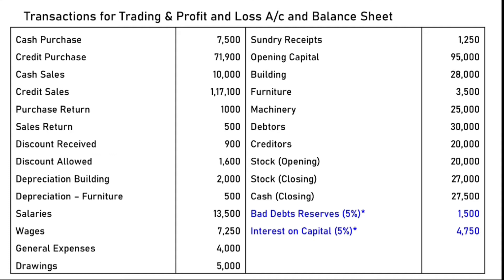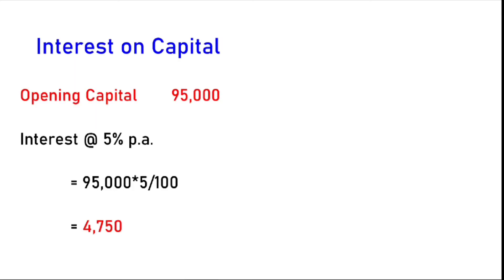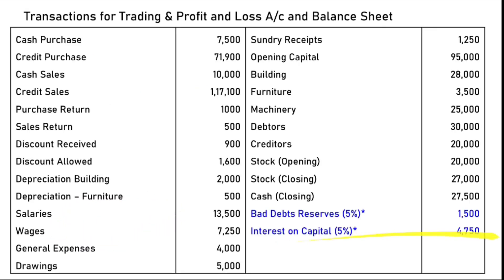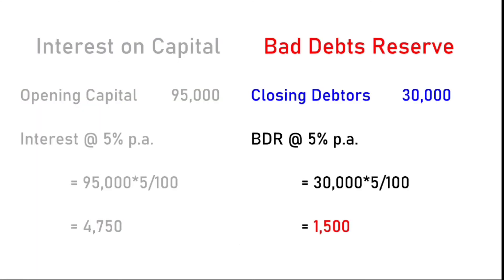We have two more adjustment items: bad debt reserve and interest on capital. Interest on capital: opening capital 95,000 × 5% per annum = 4,750. Bad debt reserve: closing debtors 30,000 × 5% = 1,500. Interest on capital is debited to the profit and loss account, and added to capital in the balance sheet. Bad debt reserve is also debited to profit and loss account, and deducted from debtors in the balance sheet.